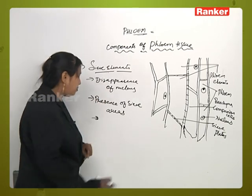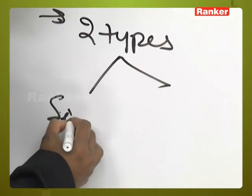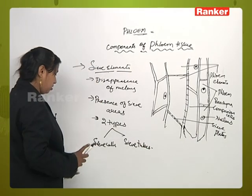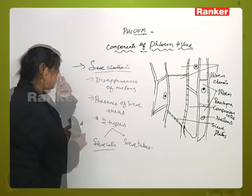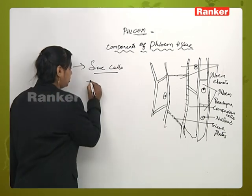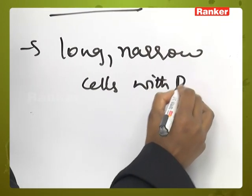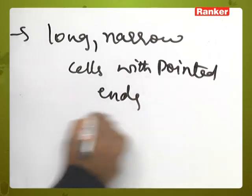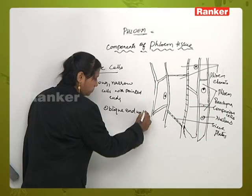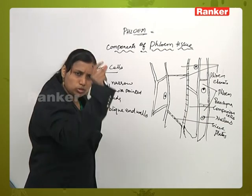Sieve elements are again of two types: sieve cells and sieve tubes. First, we will deal with sieve cells. Sieve cells are narrow and long cells with pointed ends. These are long, narrow cells with pointed ends and the end walls are oblique. One of the major components of the sieve element is sieve cells — they are long, narrow, tube-like cells with pointed ends.